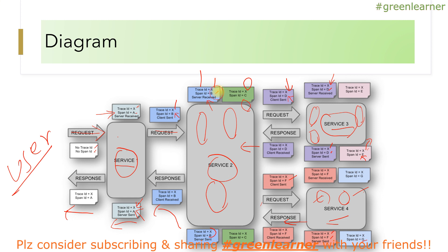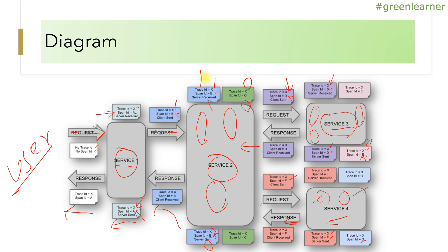From this we can derive timing information. When a span ID is active, a start time is noted, and when it travels to another network and comes back, an end time is noted. The difference gives us how much time the request took traveling across services. Using the trace ID, we can track a single request throughout the entire network - where it goes and where it comes from.